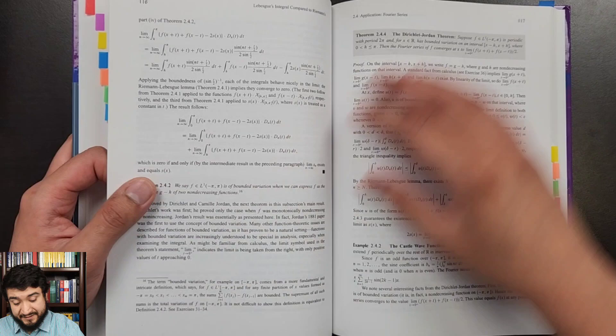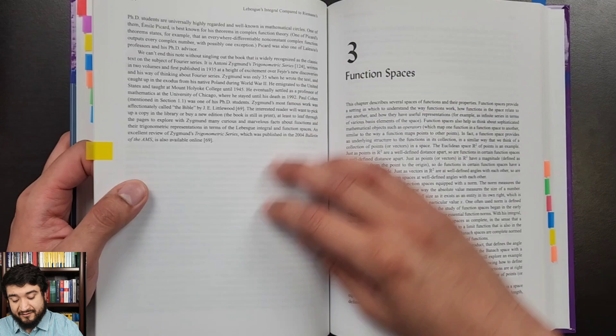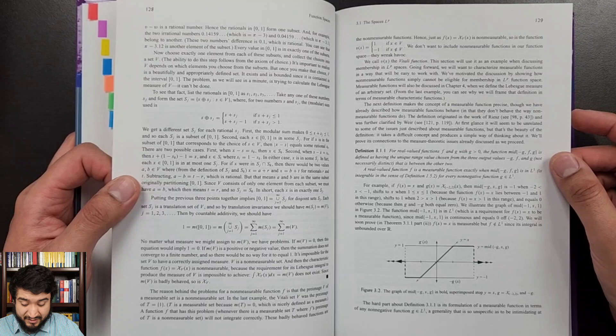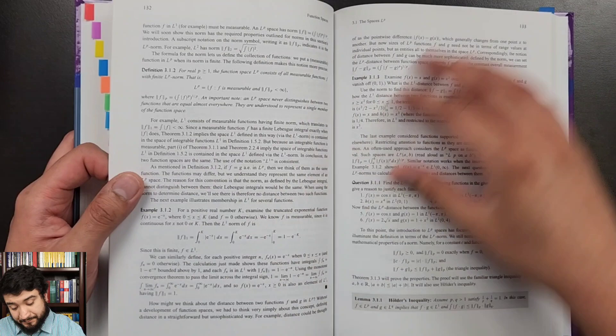And it's awesome. Again, stuff that you're probably not going to see for a while and you can get it early here from this book. Chapter three, function spaces. So you might be yelling at me telling me that I'm a liar because function spaces, that's functional analysis, right? You need linear algebra for that. You do, and he introduces you to linear algebra, which is awesome. LP spaces here.